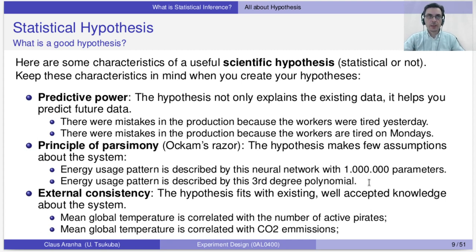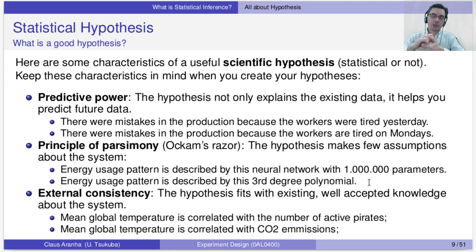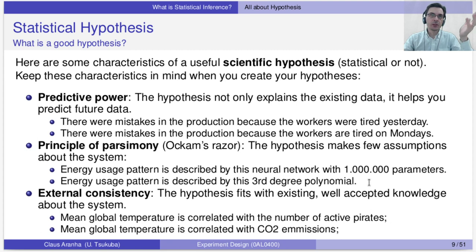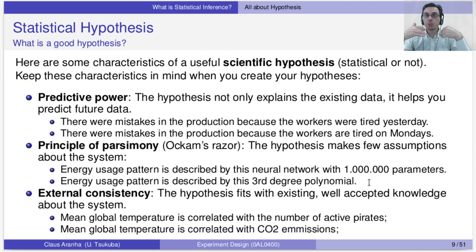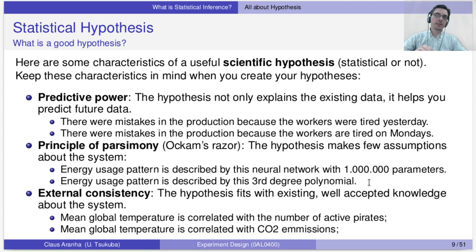A hypothesis without predictive power: 'there were mistakes in the factory because the workers were tired yesterday.' You can test it, but it doesn't say anything about tomorrow. A hypothesis with more predictive power: 'there were mistakes in production because the workers are always tired on Mondays.' If I show that on Mondays workers are more tired than usual and there are more mistakes on Mondays than usual, then I can investigate what it is about Mondays that makes the workers tired and whether I can improve that. So predictive power is important for a hypothesis.